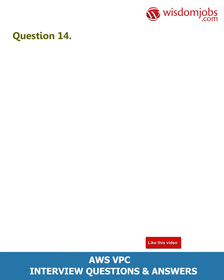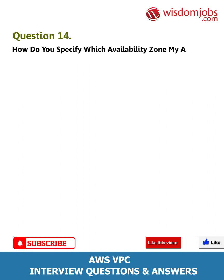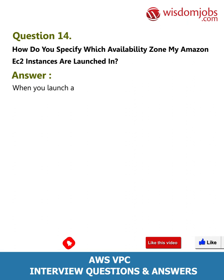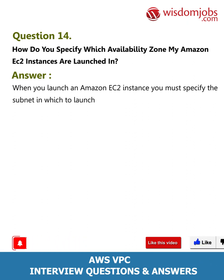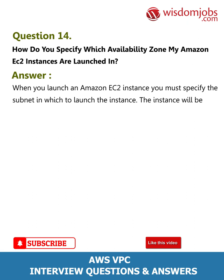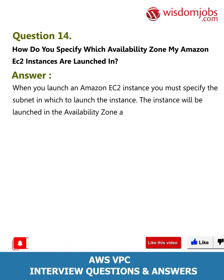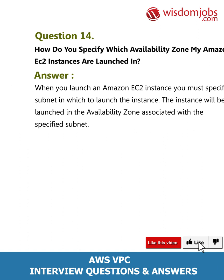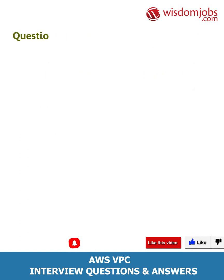Question 14: How do you specify which availability zone your Amazon EC2 instances are launched in? Answer: When you launch an Amazon EC2 instance, you must specify the subnet in which to launch the instance. The instance will be launched in the availability zone associated with the specified subnet.